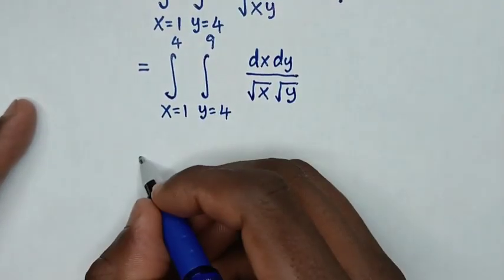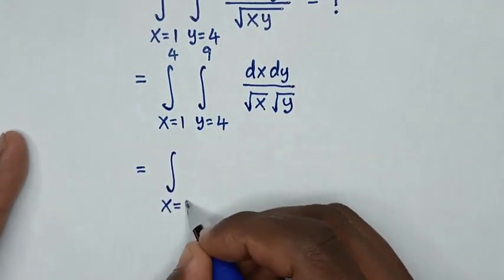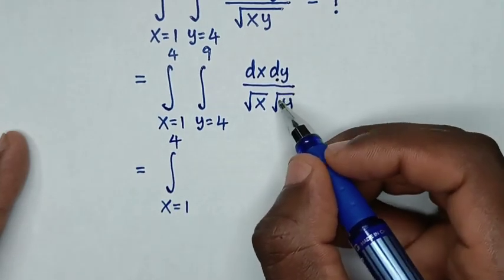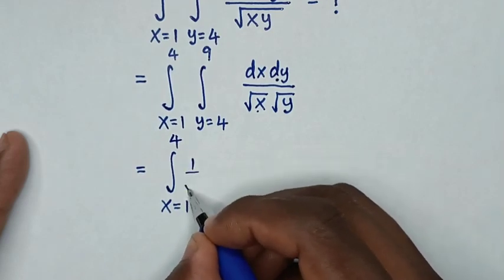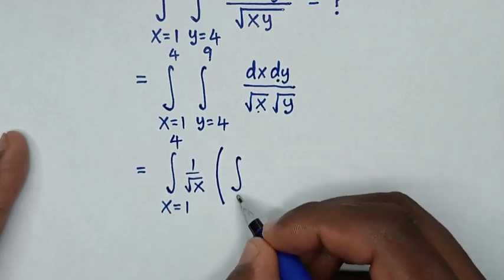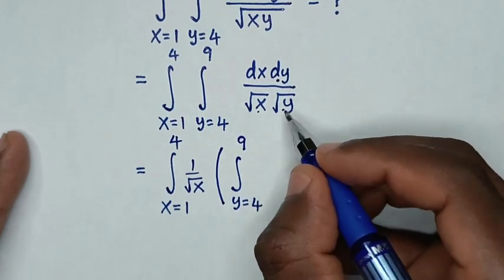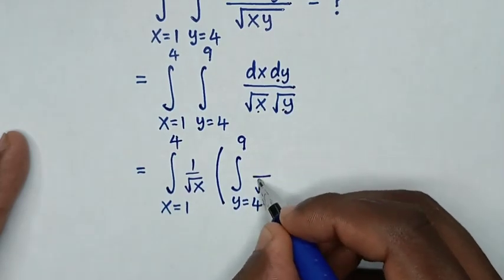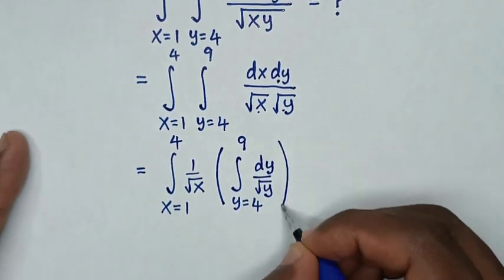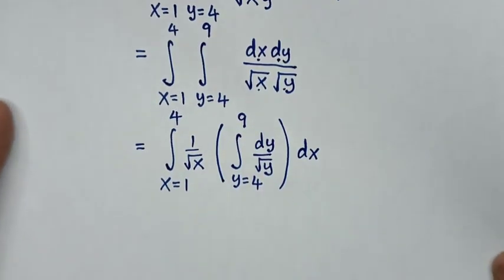In the next step, it will be equal to the integral from x equals 1 up to 4. We start to integrate with respect to dy first, so the square root of x will be taken outside. Then the bracket integral from y equals 4 up to 9 over square root of y, integrated with respect to dy, then bracket dx.